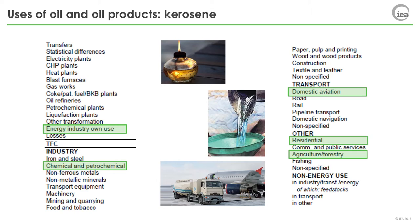Kerosene includes jet kerosene and other kerosene. It is used in cooking and lighting, which may be commercial or residential depending on where the cooking or lighting are taking place. It is also used as fuel for tractors — while this may seem at first like a transportation use, it is in fact agriculture. Kerosene is also used in chemical labs for different reasons. It can be used for cleaning materials, which is a non-energy use. Some kerosene is used in chemical labs as a heat source, which is energy use in the chemical sector. Finally, jet kerosene is used in jets for domestic or international flights — we will talk later in the presentation about the differentiation between domestic and international aviation.